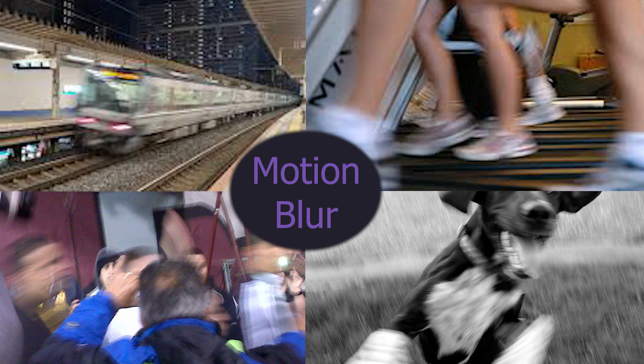And then there's motion blur, which is when an object moves past the lens at a speed faster than the camera shutter speed. What you end up with is a streak of color and smudge, and this is not something that Let's Enhance can fix either. Generally speaking, this is not something that can be fixed altogether.